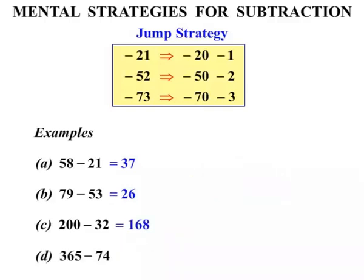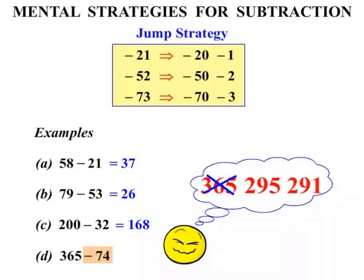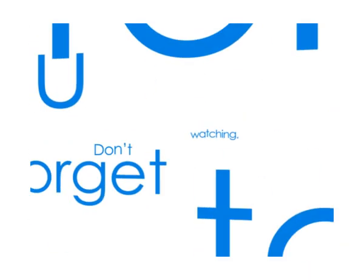Our final one, 365 minus 74. So we're thinking 365 in our head. We've got 365, we're taking away 74. So we'll take away 70, then we'll take away 4. So 365 take away 70, it's a hard one. 295. We've still got to take 4 more away, we'd be down to 291. So 291 is our final answer.